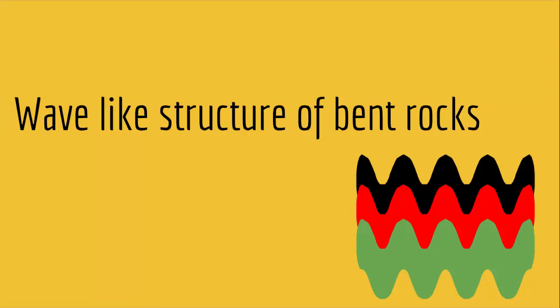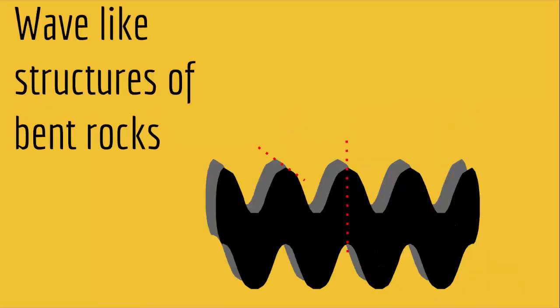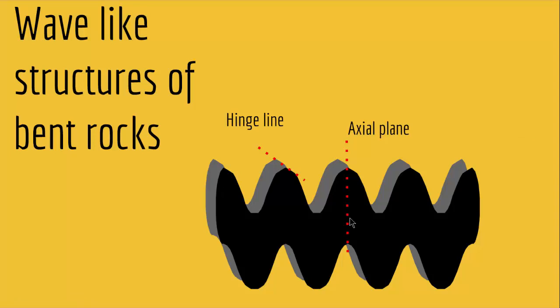We have folds that come in a wide variety of sizes and configurations. Most of the time, folds result from compressional stress that causes shortening and thickening of the crust. There are two things that you should be aware of. The first one is a hinge line — a hinge line is an imaginary axis where each layer is bent around it. Something else we have is called an axial plane, which is a surface that connects all the hinge lines and divides a fold into two roughly symmetrical limbs.